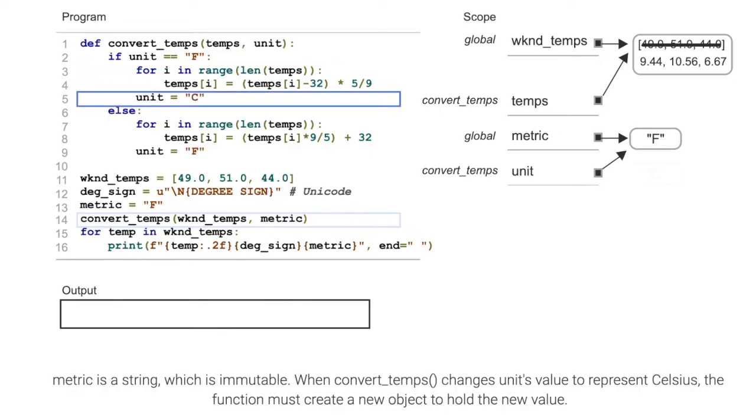Metric is a string, which is immutable. When convert_temps changes unit's value to represent Celsius, the function must create a new object to hold the new value.